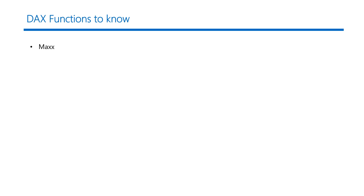The next is the FILTER function, which returns a table representing a subset of another table. It also takes two parameters: the first is the table, and the second is the filter condition. For example, if I want everyone who has done a transaction greater than 50, I pass in the table as the first parameter and 'transaction amount greater than 50' as the second parameter.